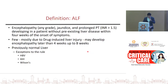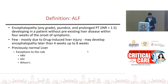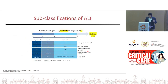EASL defines acute liver failure as encephalopathy of any grade, jaundice, and coagulopathy developing in a patient without underlying liver disease, with onset of encephalopathy within four weeks of onset of jaundice. Exceptions where underlying liver disease may be present include hepatitis B, autoimmune, and Wilson's disease. If encephalopathy develops within one week it's called hyper-acute; within one to four weeks it's called acute.